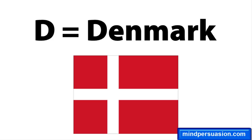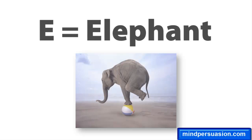Then tell them to take the original number and add 1 to it, and find the corresponding letter of the alphabet — in our case, that gives us E. Then tell them to take that letter and find a circus animal that starts with it, and think of the color of that animal. In our case, E gives us elephant, which is gray.